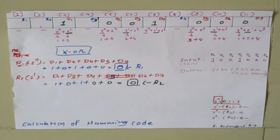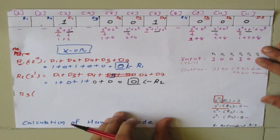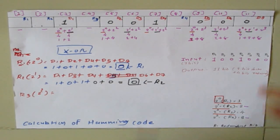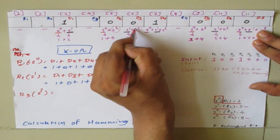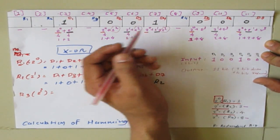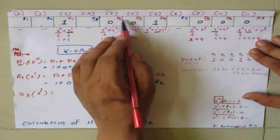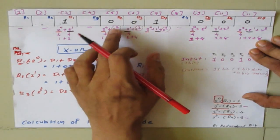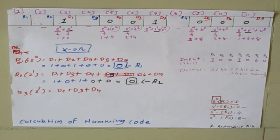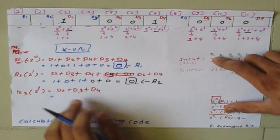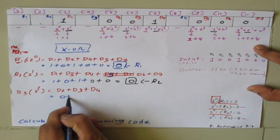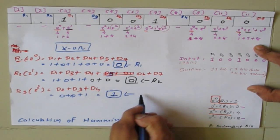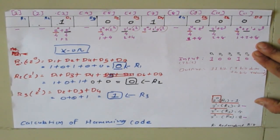Now calculate r3. r3 corresponds to 2 raised to 2. Find all positions where 2 raised to 2 is used — those are d2, d3, and d4. Using XOR: r3 equals d2 XOR d3 XOR d4 equals 0 XOR 0 XOR 1 equals 1. So the value of r3 is 1.